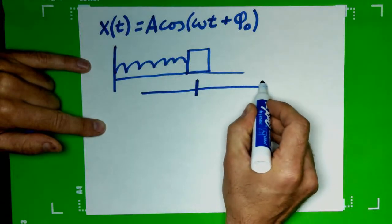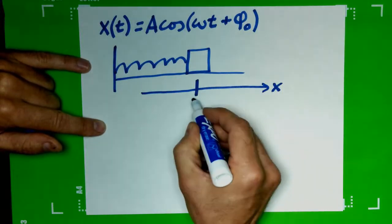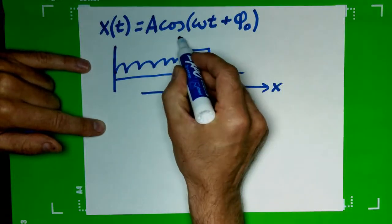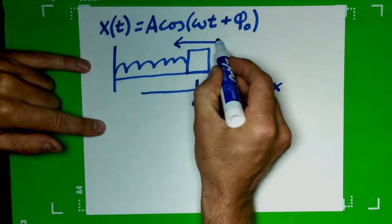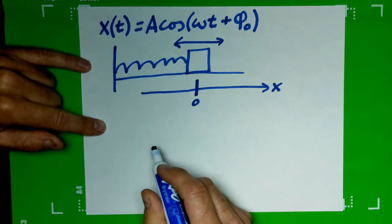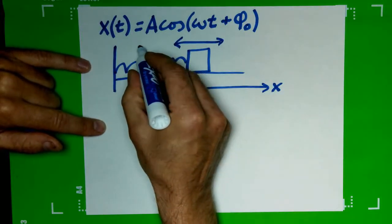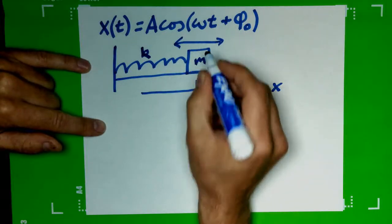If this were the equilibrium point and we chose to the right to be our positive, then this block could oscillate back and forth around that point. The spring could have a spring constant k, and the block would have a mass m.